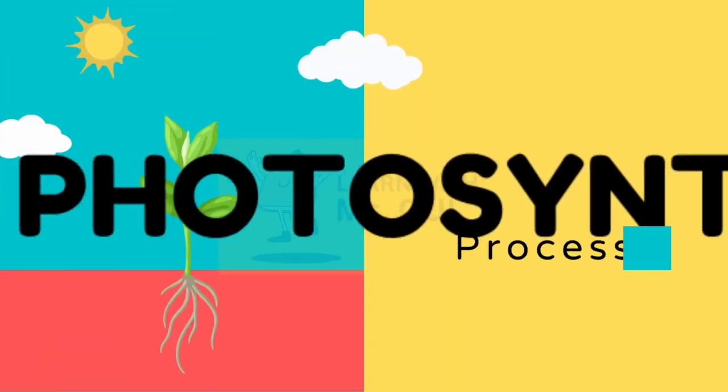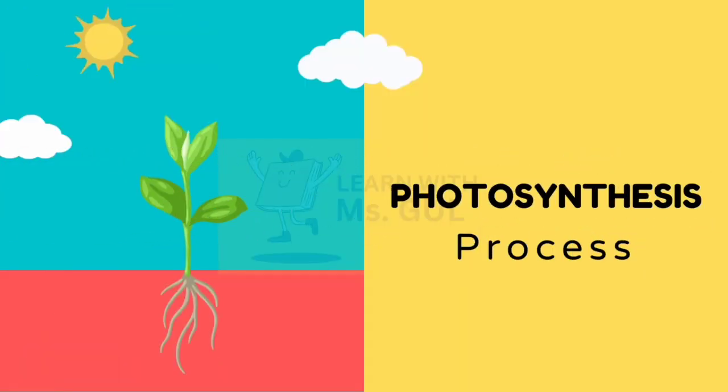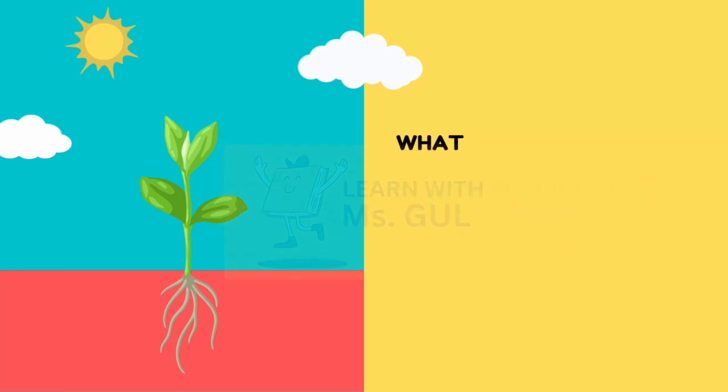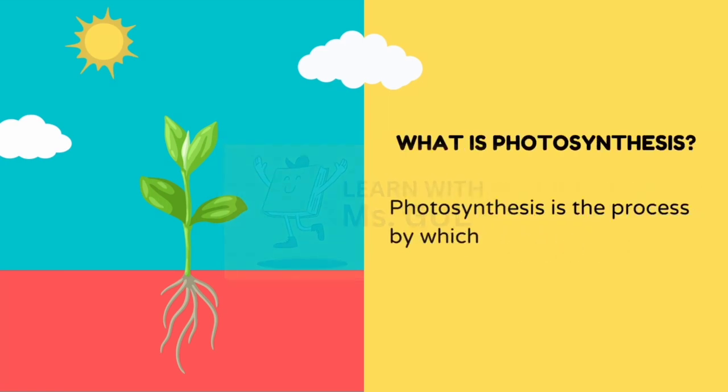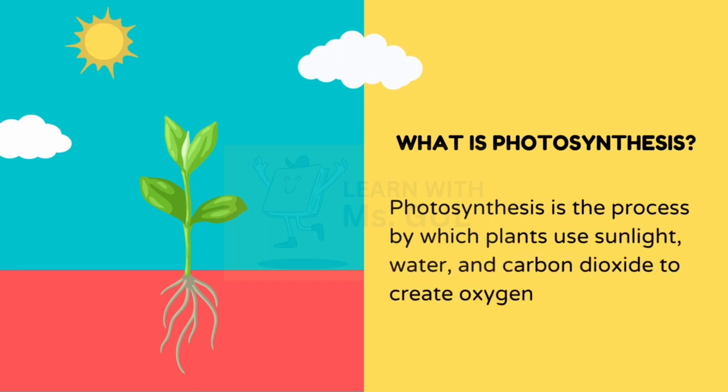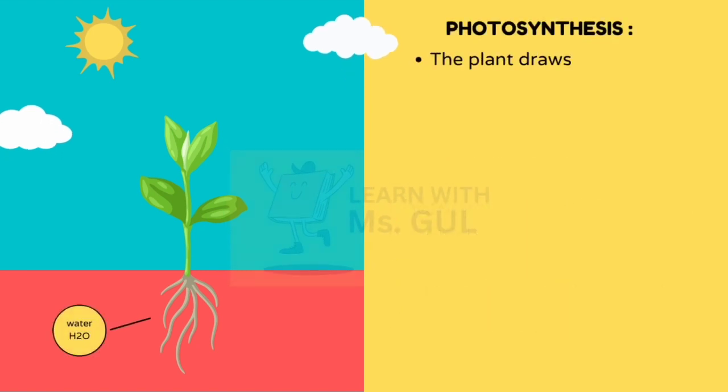Hey, let's learn about the photosynthesis process today. Do you know what is photosynthesis? Photosynthesis is the process by which plants use sunlight, water, and carbon dioxide to create oxygen and energy in the form of sugar.